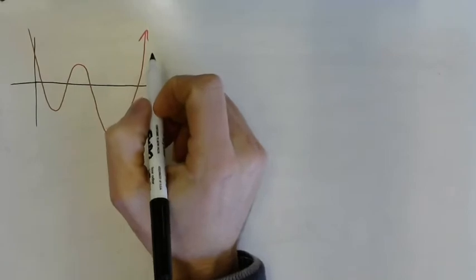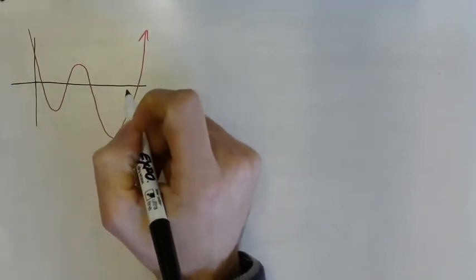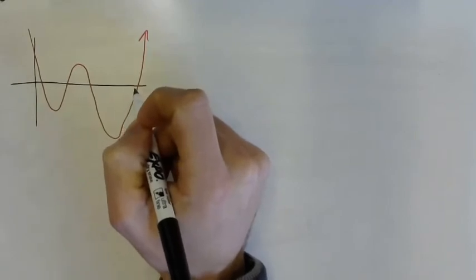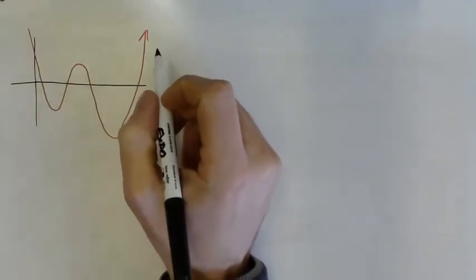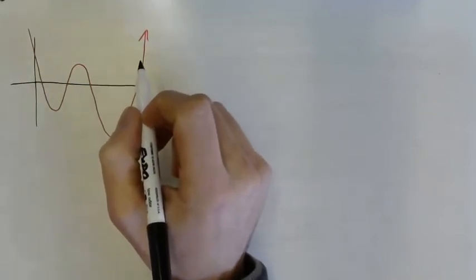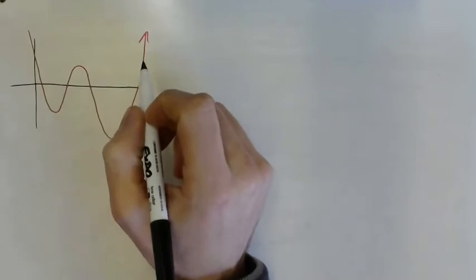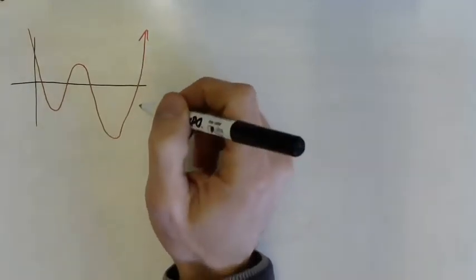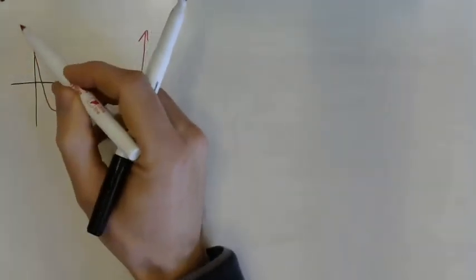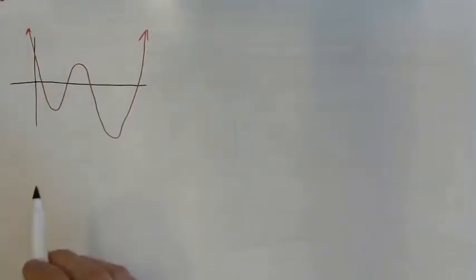Lesson 3.1: increasing and decreasing functions. We've done a lot with functions and their derivatives, differentiating different types of functions and analyzing. We talked about distance, displacement, velocity, and acceleration. This lesson continues bringing those things to light, talking directly about where a graph is increasing or decreasing.